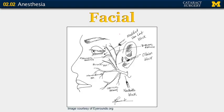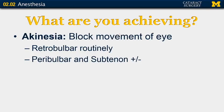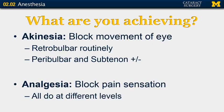Facial nerve block anesthetizes cranial nerve seven, which controls the orbicularis oculi muscle involved in eyelid closure. Ultimately, what are you achieving with all these different types of anesthesia? Akinesia is blocking the movement of the eye — retrobulbar block does this routinely since it's placed in the intraconal space and anesthetizes cranial nerves three and six. Peribulbar and subtenons block may or may not achieve akinesia, since they rely on diffusion into the intraconal space. Analgesia is blocking pain sensation, and all types of anesthetics should achieve this at different levels, with the exception of the facial nerve block.